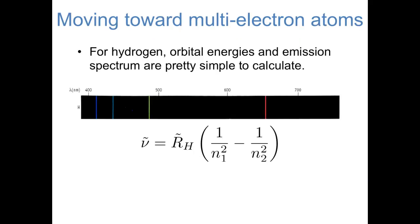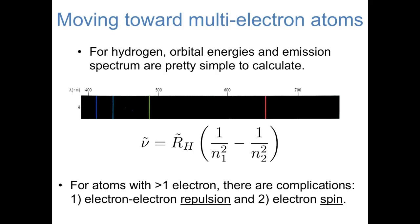Compared to multi-electron atoms, the orbital energies and emission spectrum of hydrogen are relatively simple to calculate. The Schrödinger equation, and consequently the Rydberg equation, tell us that the energy of a hydrogen electron depends only on the principal quantum number n. So in the emission spectrum of hydrogen, we see bands corresponding to light emitted when an electron drops from a higher to a lower value of n. Things get a bit more complicated for multi-electron atoms.